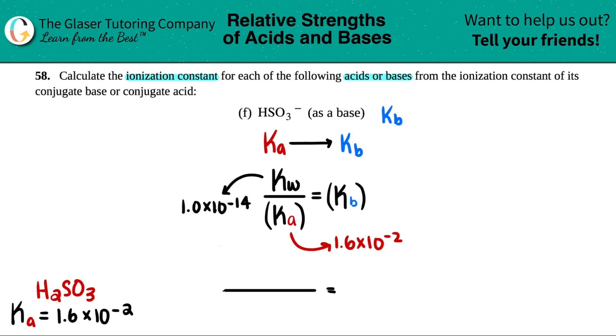So let's get this going. This something divided by something else is equal to KB. 1.0 times 10 to the negative 14th divided by 1.6 times 10 to the negative 12th.